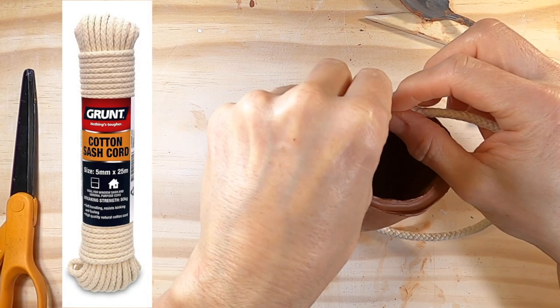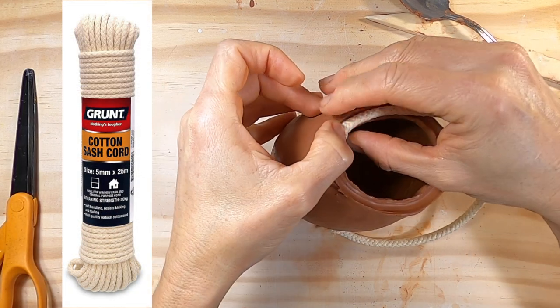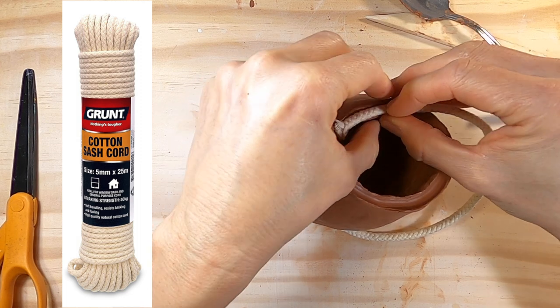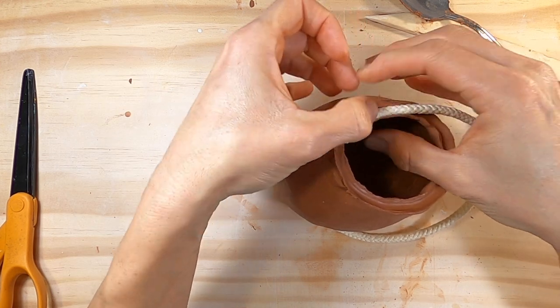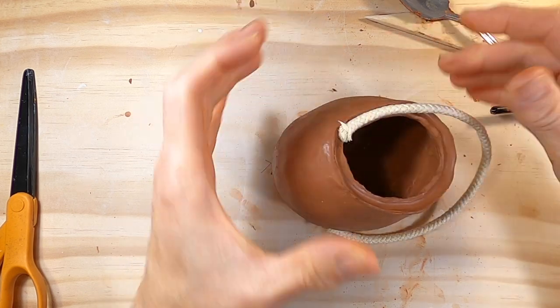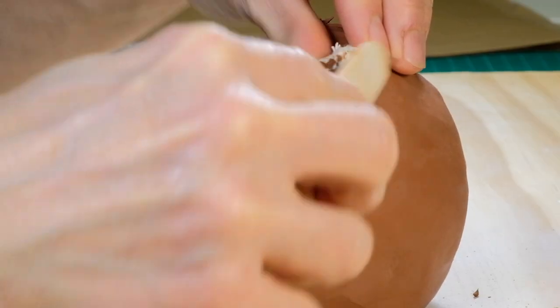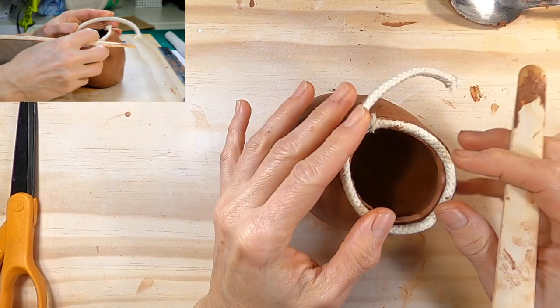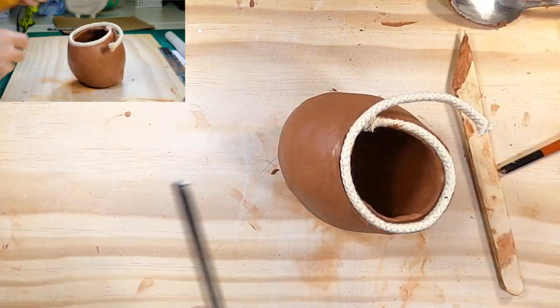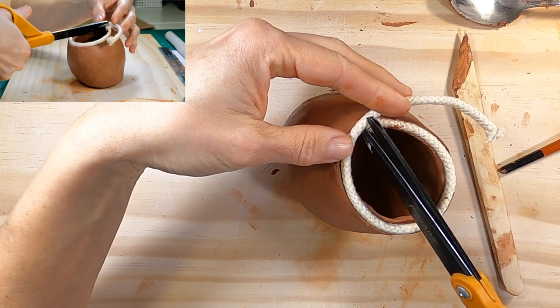I'm using 5mm cotton sash cord from the hardware. Cut a piece of cord and press it into the channel around the lip. Gently press and push the clay around the cord. This is a little bit fiddly but worth doing as it means that the cord will look like it's a part of the pot, almost as if it's emerging from the clay. Trim the end of the cord so it fits snugly on the top.